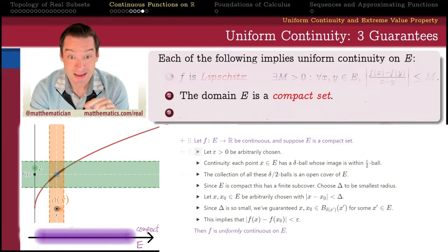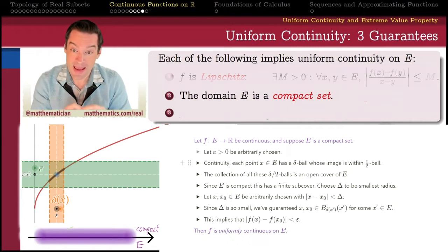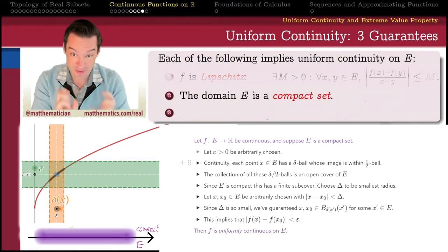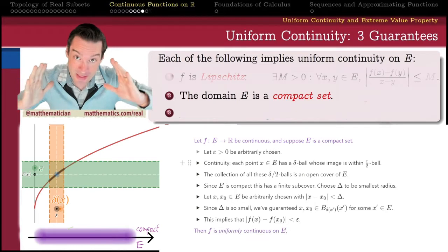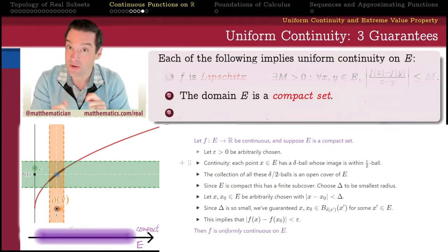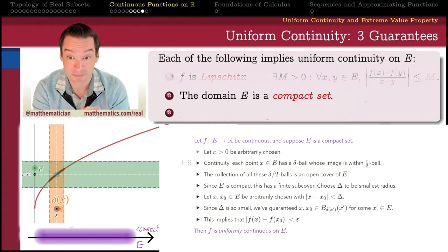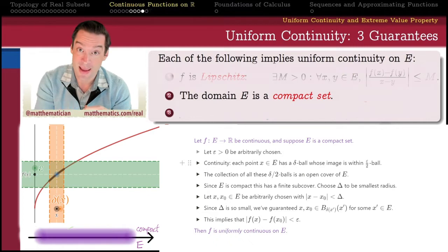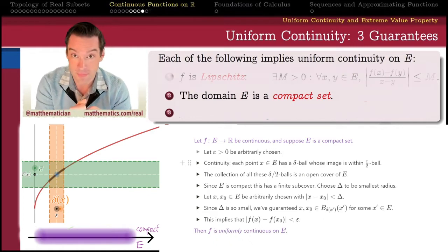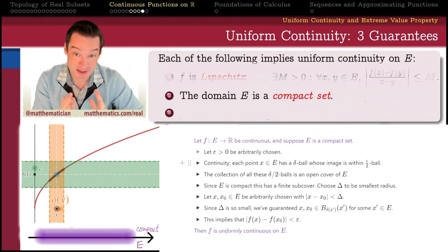We're going to do that by starting from continuity. Starting from continuity, we'll be able to say that every point in the domain has a delta ball whose image is within epsilon over two of one another — not just within epsilon. There are a couple of instances where we take what we have and make it a little tighter by cutting it in half, because later in the proof we'll need to piece together a couple of those estimates to get back to where we started. So every x is going to have a delta ball whose image is within an epsilon over two ball in the codomain. But then, rather than using those full delta balls, we're going to cut each ball's radius in half to get delta over two balls.